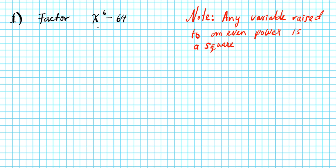Is X to the sixth a square? We examine the power — the power is six. Six is clearly even because it's divisible by two, hence X to the sixth is a square. Is 64 a square? Can you think of a number multiplied by itself to yield 64? Yes — eight times eight is 64. So now that we have a difference of squares, we can use the difference of squares formula to factor this.